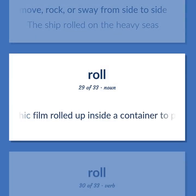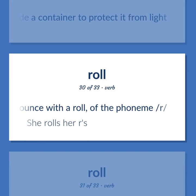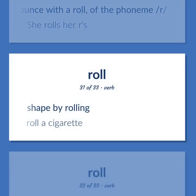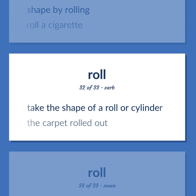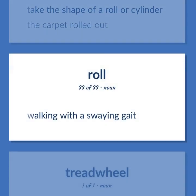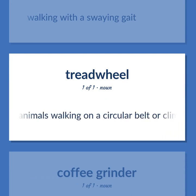Roll: photographic film rolled up inside a container to protect it from light. To pronounce with a roll of the phoneme R — she rolls her Rs. To shape by rolling — roll a cigarette. To take the shape of a roll or cylinder — the carpet rolled out. Walking with a swaying gait. A treadmill: a mill that is powered by men or animals walking on a circular belt or climbing steps.